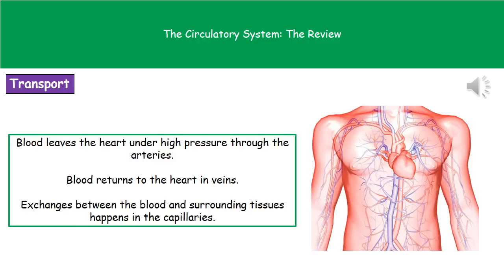Welcome to our review on the circulatory system. We've already looked at blood, so now we need to understand how we're actually going to move blood around our body. Blood leaves the heart under very high pressure through blood vessels called arteries. Blood will always return to the heart through blood vessels called veins, and any exchanges between the blood and surrounding tissues happen only in the capillaries.